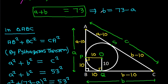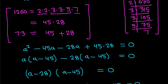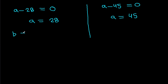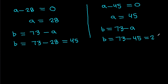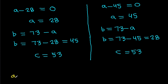We have B equals 73 minus A. If A equals 45, then B equals 73 minus 45, which equals 28. And we have C equals 53. So the sides A, B, C are 28, 45, 53 or equivalently 45, 28, 53.